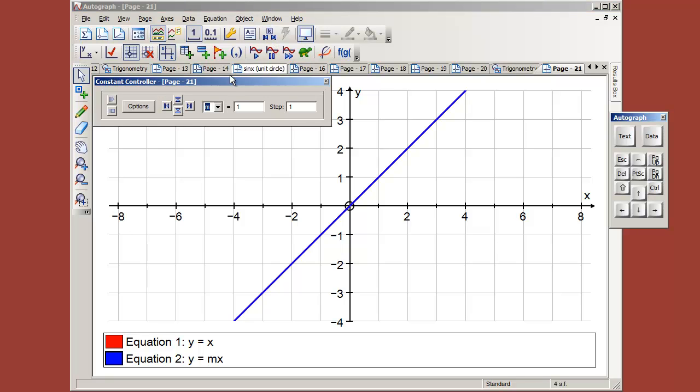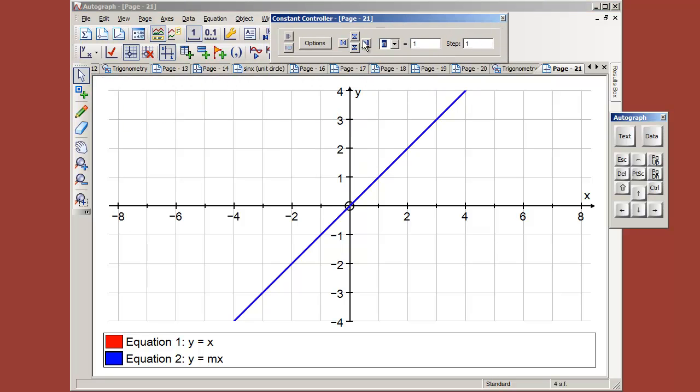If we increase m using the constant controller, you can see that m becomes 2 and 3 and 4 and so on. That'd be quite nice if we show that this was indeed a triangle that represents the gradient.